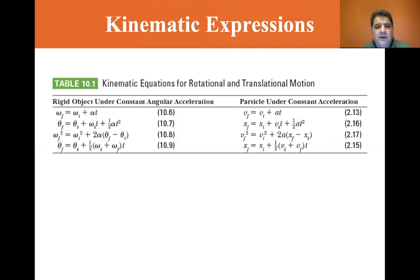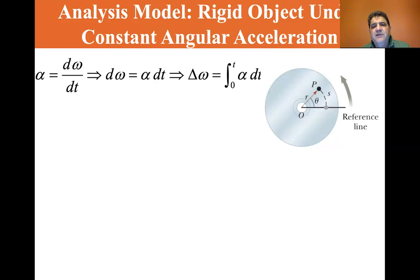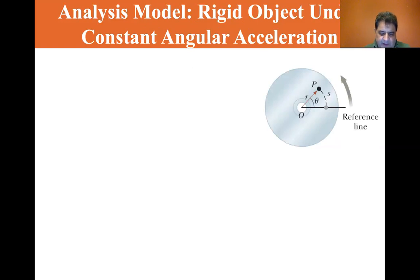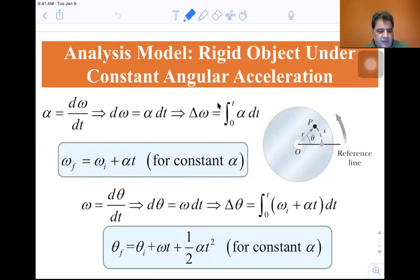You'll see that they're very, very similar by the time we finish this. It's easier for me to discuss this if I go to my iPad. So this is rigid object under constant angular acceleration. We know that angular acceleration is the time rate of change of angular velocity: α = dω/dt.